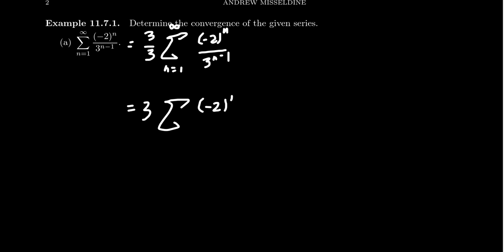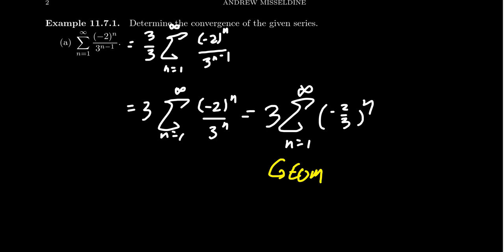We're going to get negative 2 to the n over 3 to the n, as n goes from 1 to infinity. And therefore, rewriting this just one more time, admittedly we could have gotten this done really quick, n equals 1 to infinity, we have negative 2 thirds to the n. And so now we can actually see this series as the geometric series that I claimed it was.